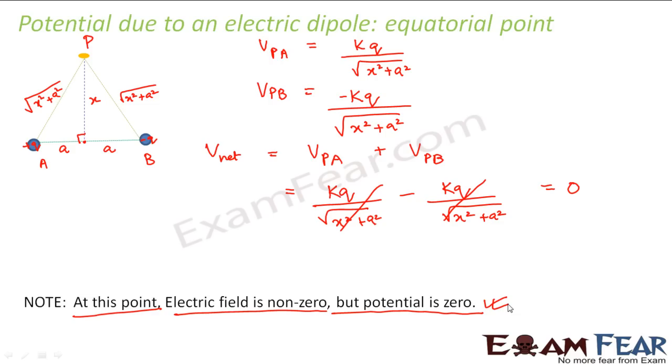So the potential due to an electric dipole at an equatorial point is always zero.